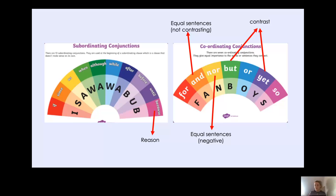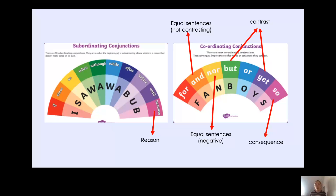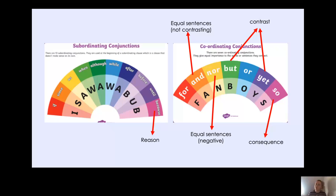And then we have 'so'. An example of a sentence with 'so': I didn't do my work so I had to stay in at break time. So 'so' shows a consequence. I didn't do my work, so my consequence was I had to stay in at break time. Could you pause the video and have a think of a sentence that has 'so' in it? I thought of another sentence too: I didn't feel well, so I didn't go to school. The consequence of me not feeling well was that I didn't go to school.